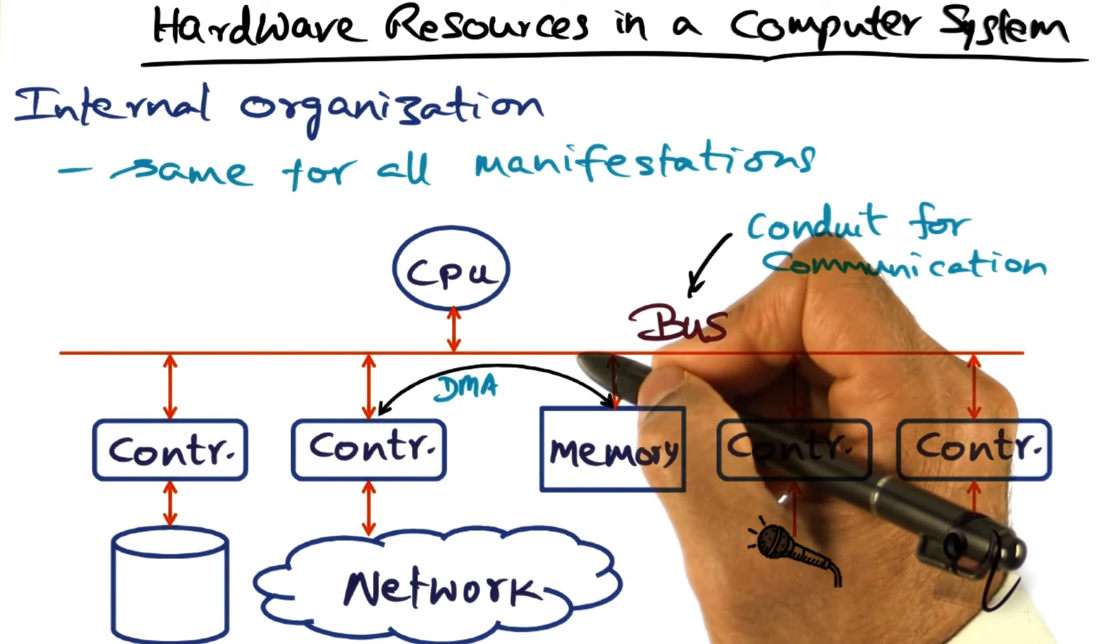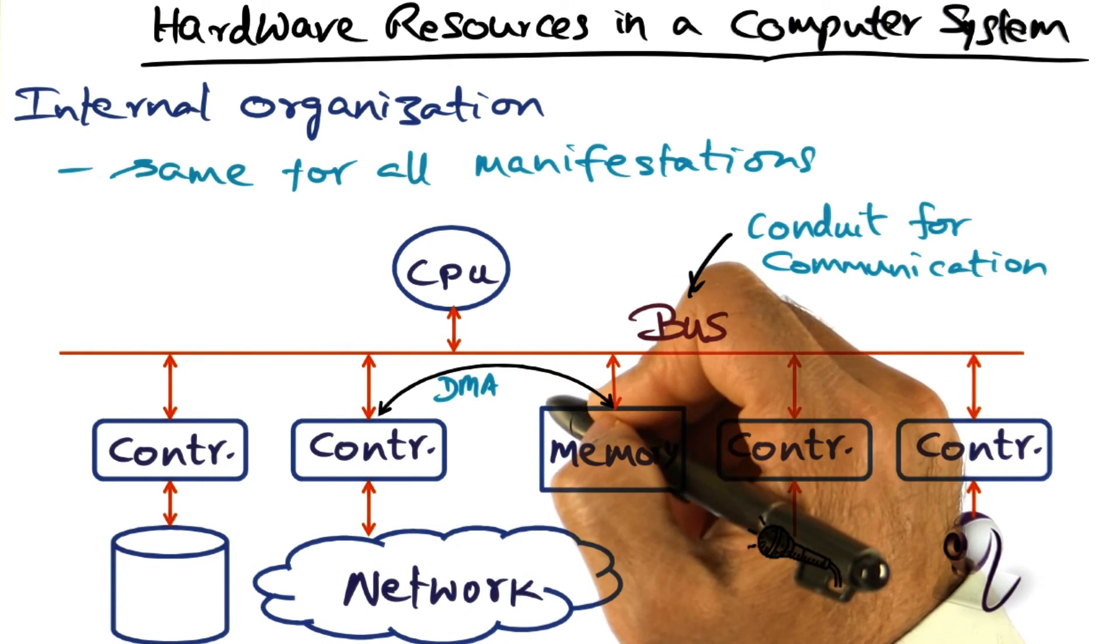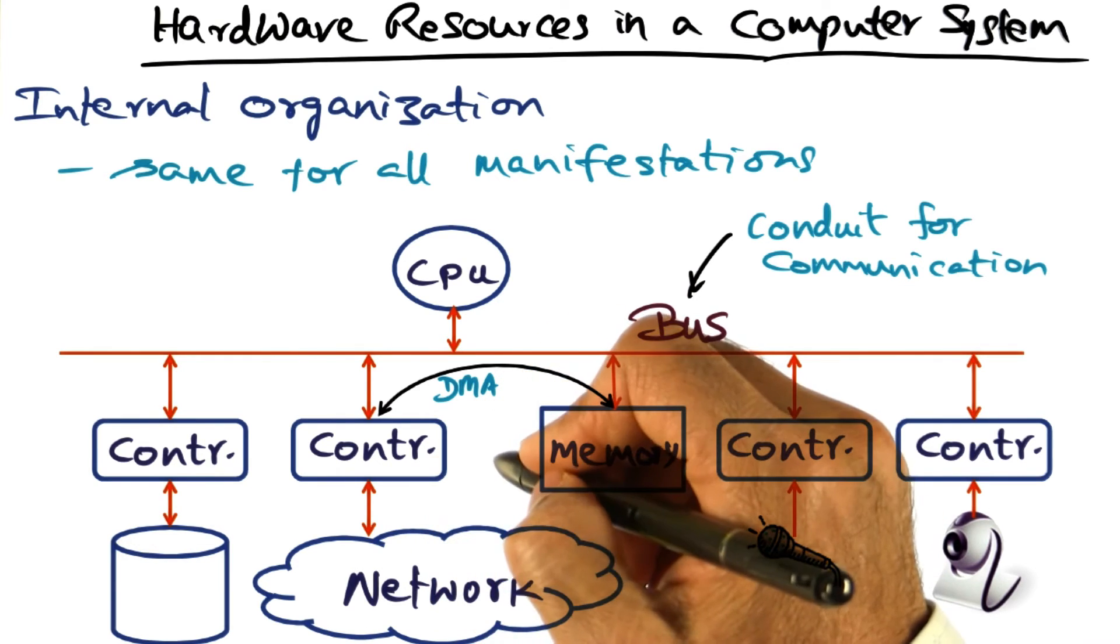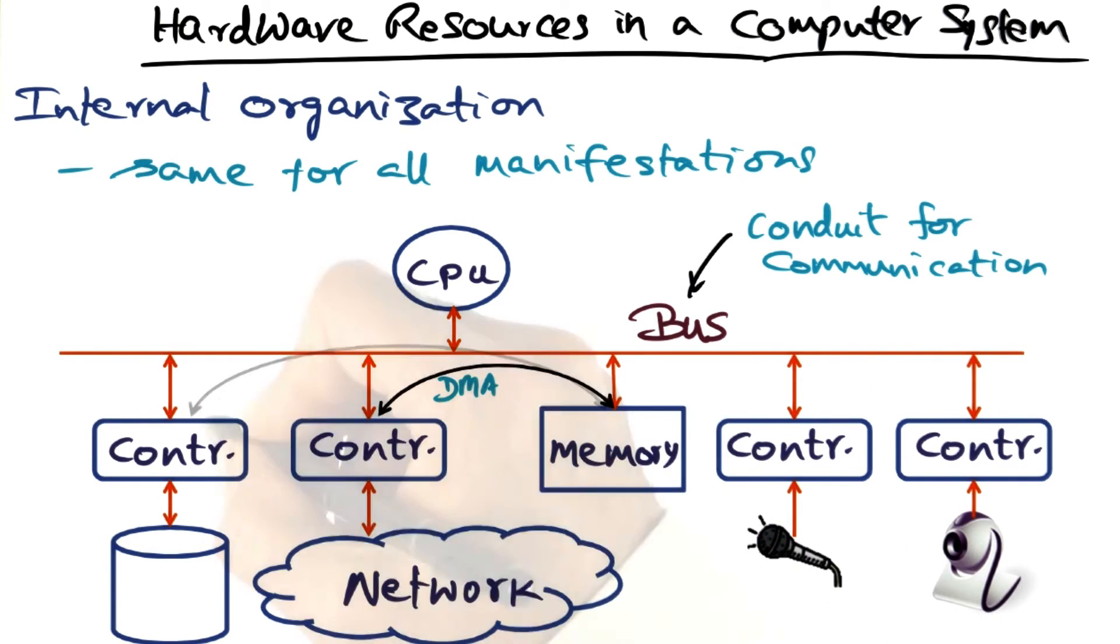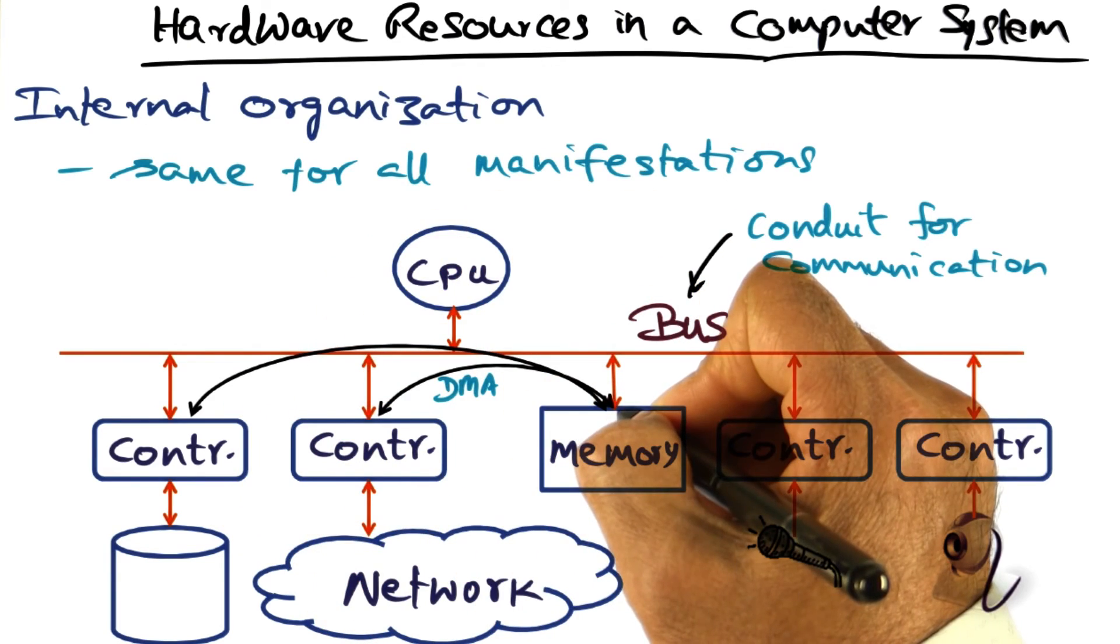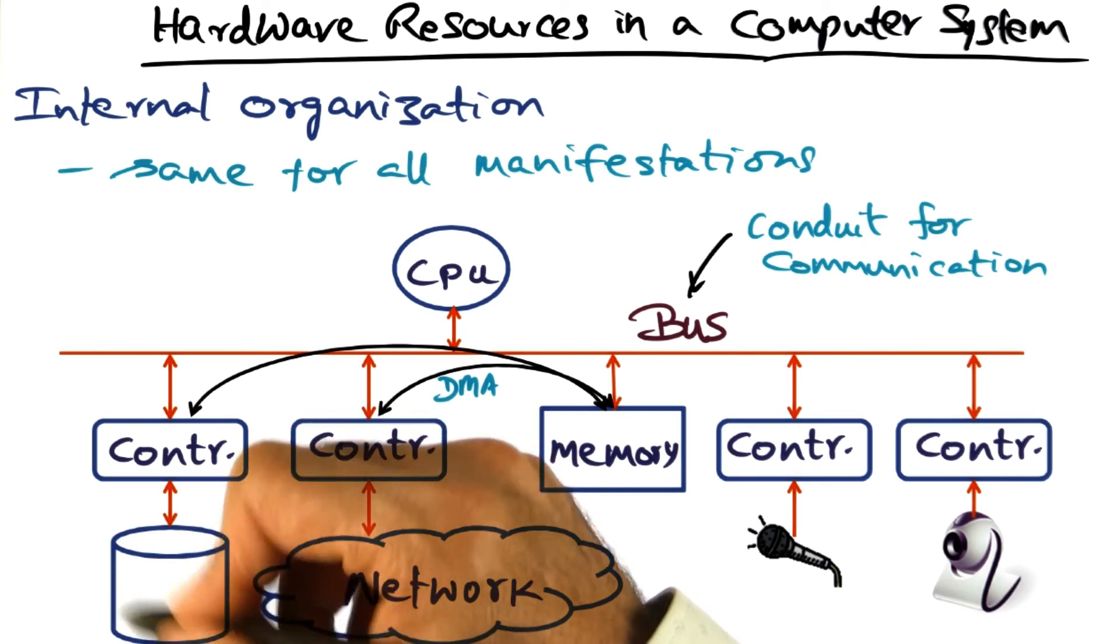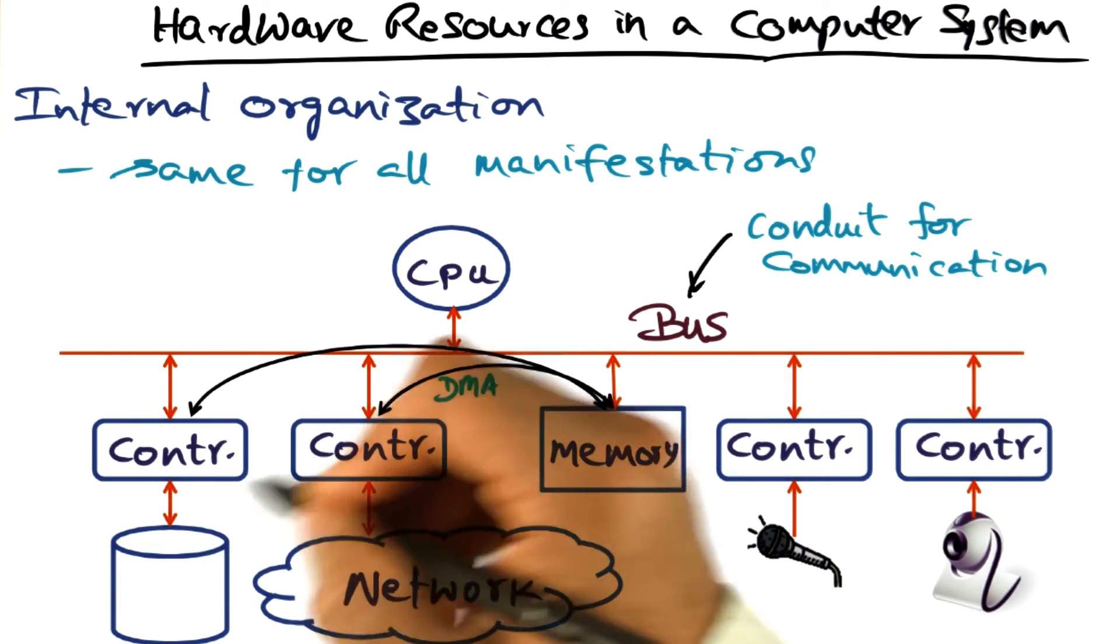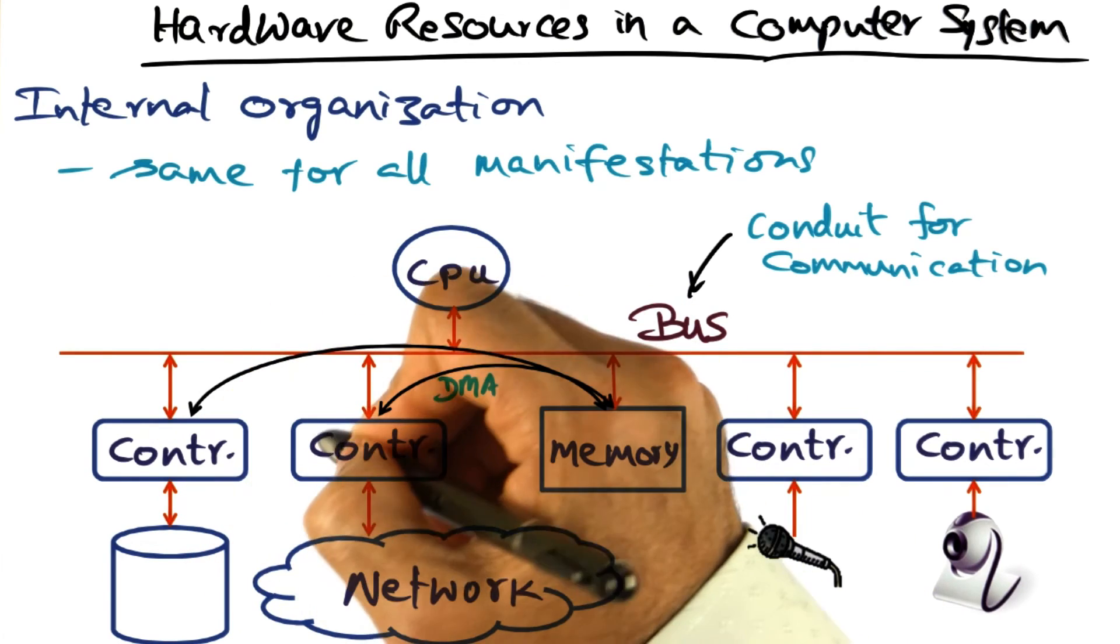This, as you may have learned in a computer organization course, is called direct memory access for the controller to move data swiftly between memory and the IO device. Similar DMA facility may exist in the controllers of other high-speed devices. Disk is another high-speed device. That's the capability you've got for some of these controllers.